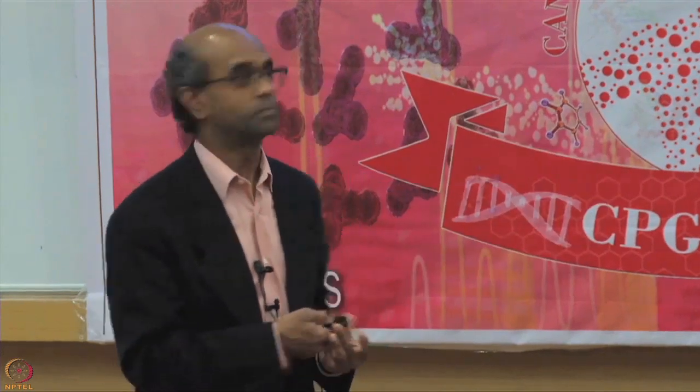Supervised learning is where you look at training examples and then try to learn. You are shown an image and told this is a cat; shown another and told it is a dog. After seeing millions of labeled images, when you get a new image, can you say whether it is a cat or a dog? There are many algorithms you can use. There is also a distinction between regression and classification: if you have to predict a continuous value — like how long a patient will live after cancer diagnosis — that is regression. But if it is grouping — like which cancer subtype a patient falls into — that is classification.